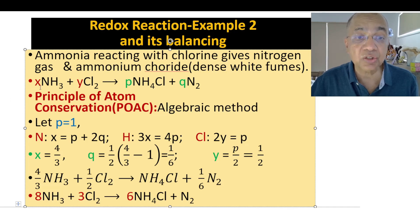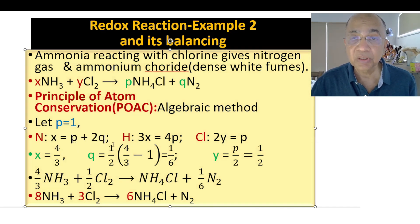So let's presume p is equal to 1, because these are all whole number ratios, simple ratios. You can presume any of these coefficients as one. Usually the one having more number of atoms, the difficult molecule, is taken as one for simplicity of calculation and to avoid fractional values. So we have to conserve all the elements one by one. Let us talk about nitrogen, POAC. The number of nitrogen atoms will remain same on both sides, left and right. So in the left side there are x nitrogens, and in the right side there are p nitrogen from ammonium chloride and 2q nitrogen from nitrogen gas.